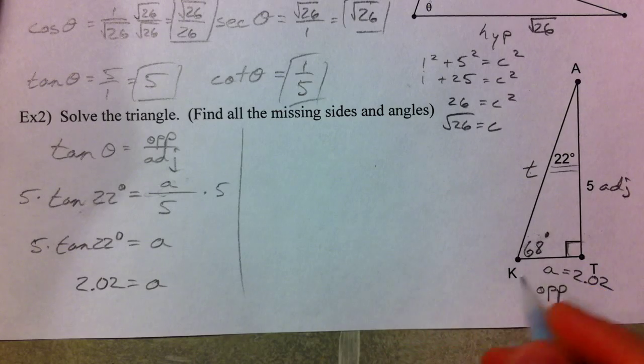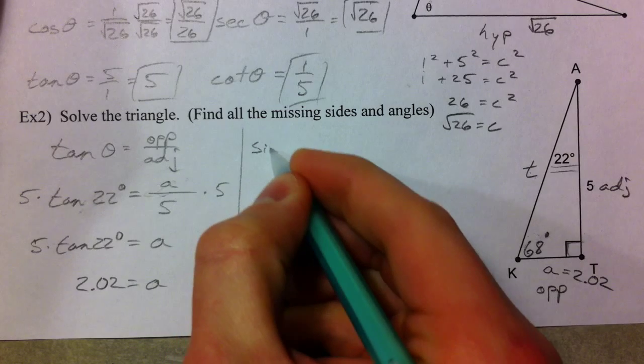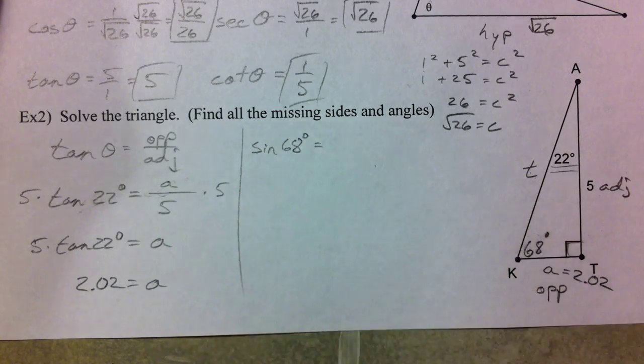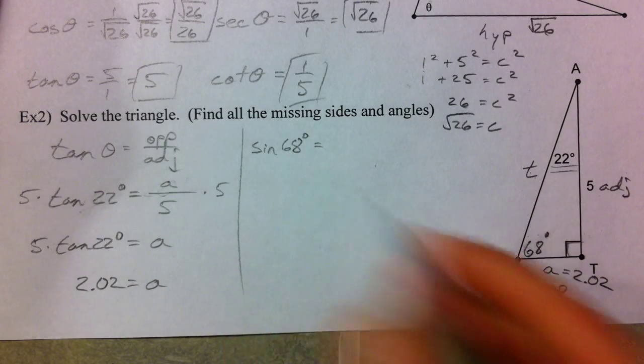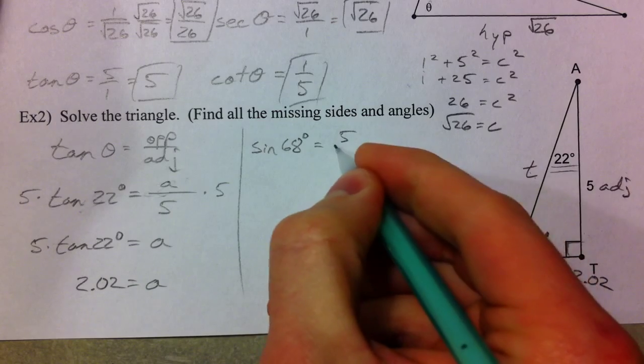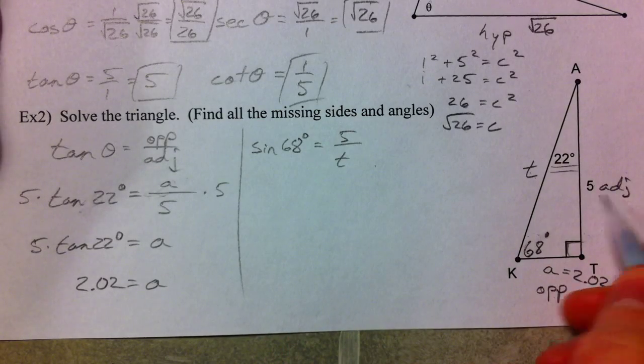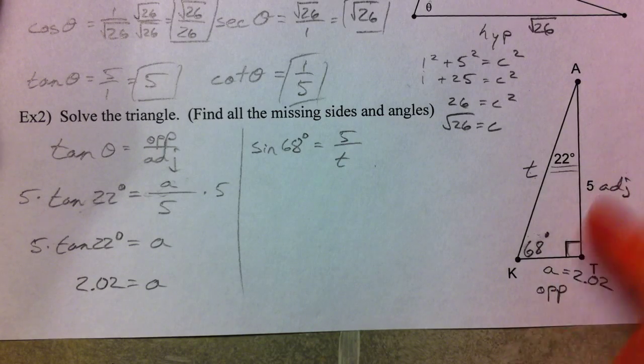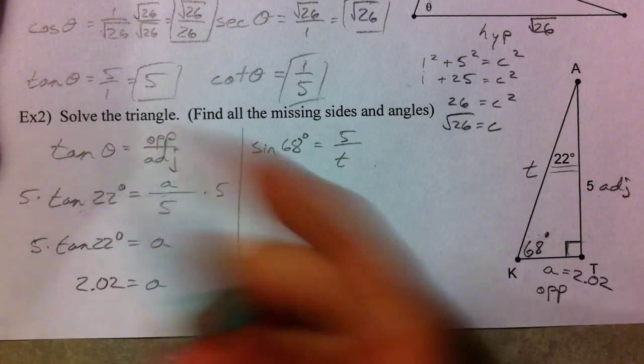Let's use 68. And the opposite over the hypotenuse. So 68, the sine of 68 degrees, is 5, the opposite over the T. Now I had marked this adjacent, but 5 is opposite of the 68. And so when you use the different angle, the opposite and the adjacent swap sides. So, how do we solve this? We've got to get T by itself.